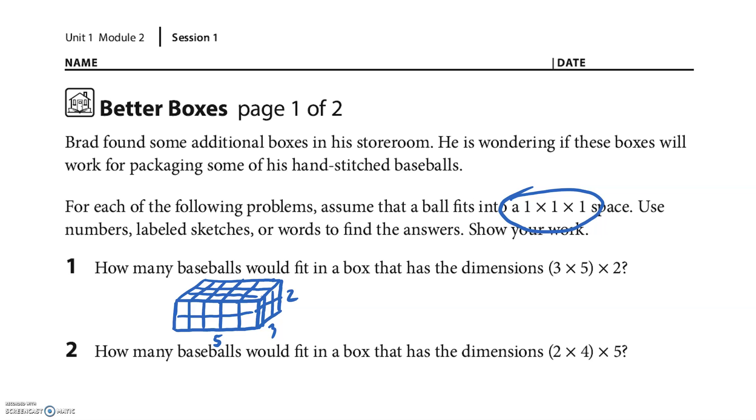How many baseballs is what we're trying to get to, so we're just going to do the math. We're going to multiply 3 times 5 is 15. If I multiply that by 2, that would be 30, so 30 baseballs.